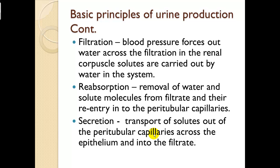Basic principles of urine production continued: filtration occurs in Bowman's capsule. In the glomerulus, blood pressure forces water out across the filtration membrane in the renal corpuscle; solutes are carried out by the water. Reabsorption is the removal of water and solute molecules from the filtrate and their reentry into the peritubular capillaries outside the tubule. Secretion is the transport of solutes out of the peritubular capillaries across the epithelium into the filtrate — secreting ions, waste, and so on.